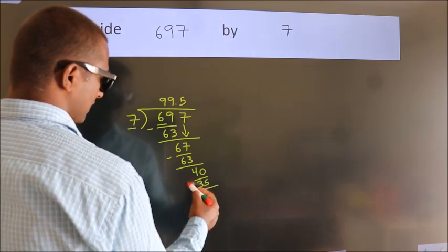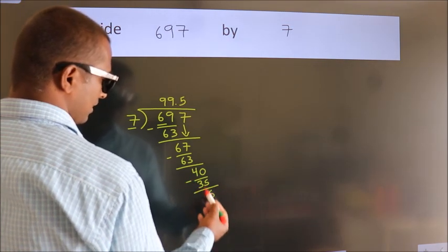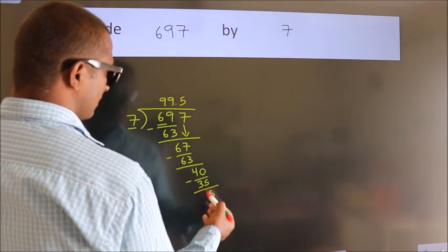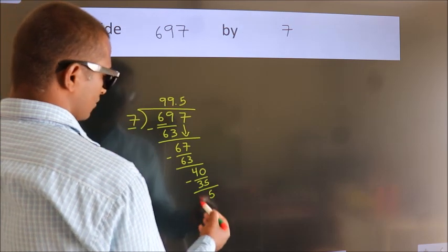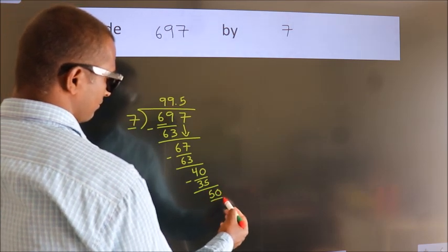Now we subtract. We get 5. After this, we already have the decimal, so directly take 0. So 50.